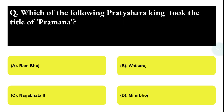Next question: which of the following Bhatia Har kings took the title of Brahmana? Option A: Ram Buja, Option B: Vatsaraja, Option C: Nagabhat Tattu, Option D: Mihir Bhoja. The correct answer is option D, that is Mihir Bhoja.